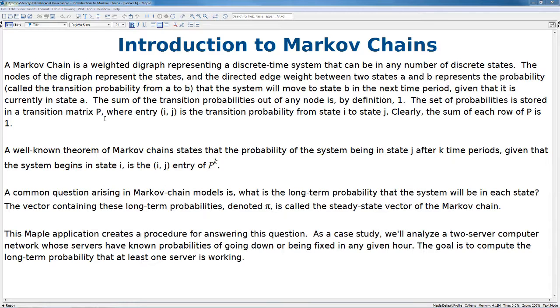A well-known theorem of Markov chains states that the probability of the system being in state j after k time periods, given that the system begins in state i, is the i,j entry of P to the power of k.